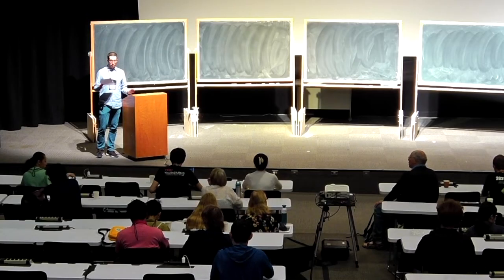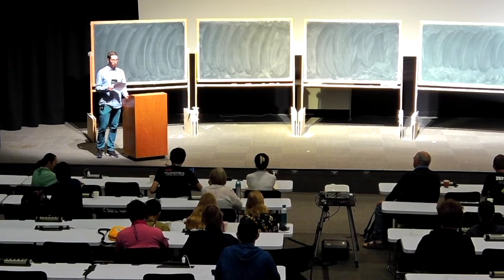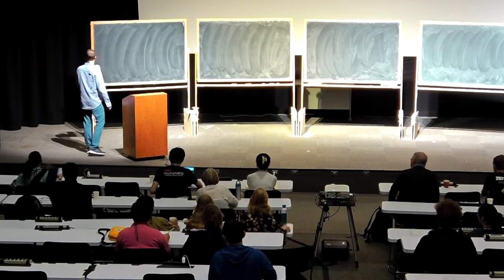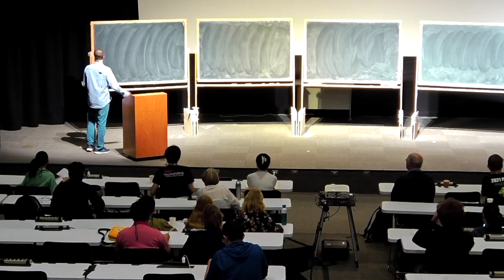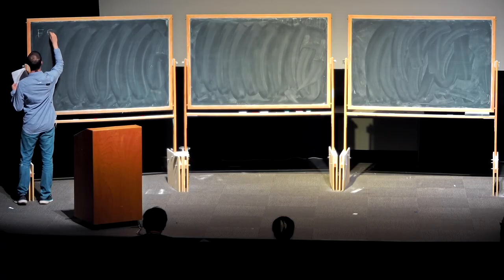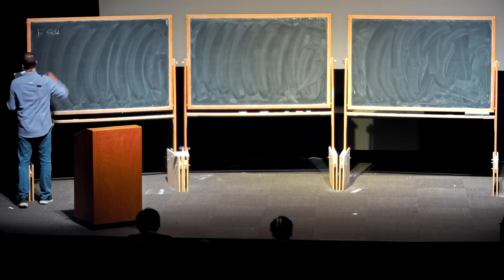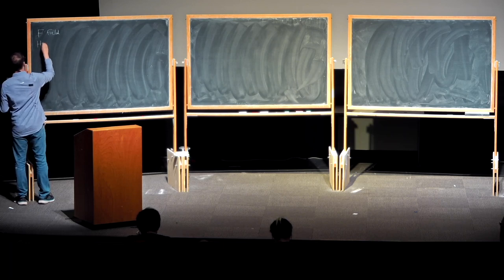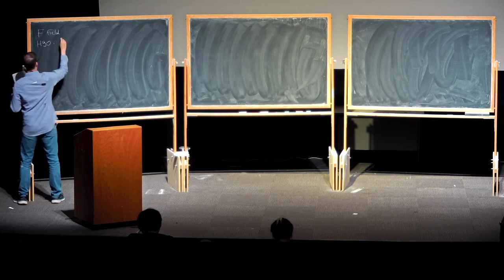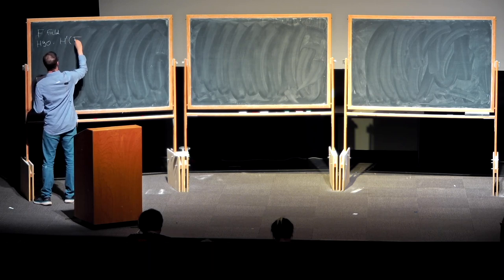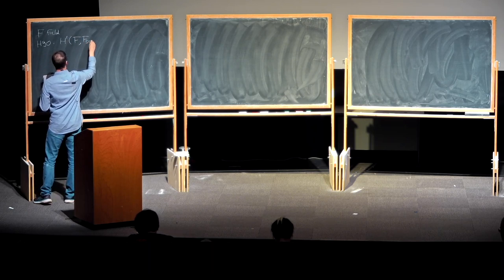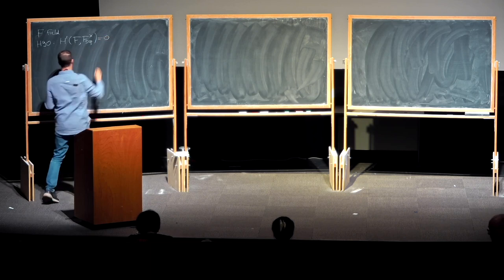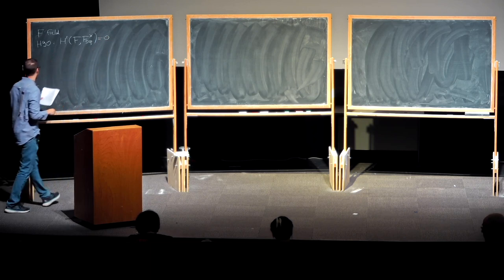Today we discuss topics related to Massey products and the Massey vanishing conjecture, but not the conjecture strictly speaking. Let us begin. Suppose F is a field. Hilbert 90 tells us that H1(F, F*) = 0. This is a fundamental result in Galois cohomology.